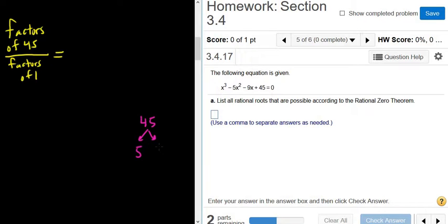So 45 is really, let's see, it's really 5 times 9, right? And then 9 is 3 times 3. So let's see, so 1 is a factor of 45. So is 3. So is 5, plus or minus 5. So is 9, right? So is 9.